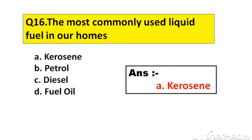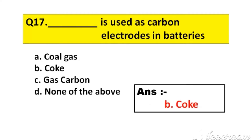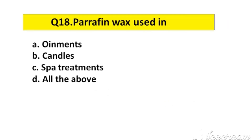Question number 17. Which is used as carbon electrodes in batteries? Option A: Coal gas, B: Coke, C: Gas carbon, D: None of the above. The right answer is option B: Coke.